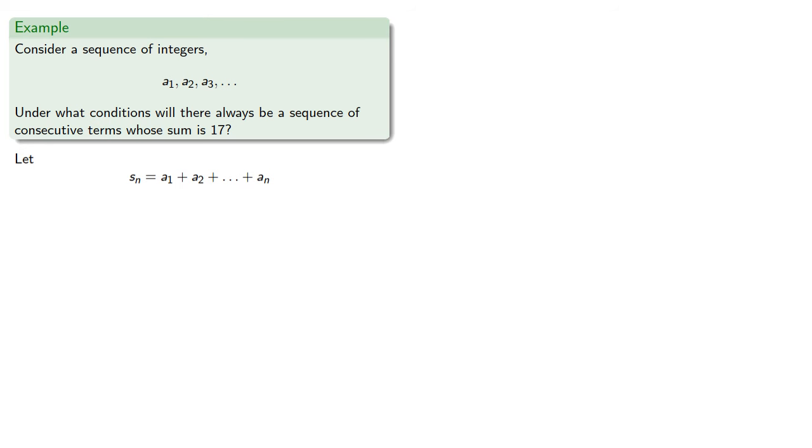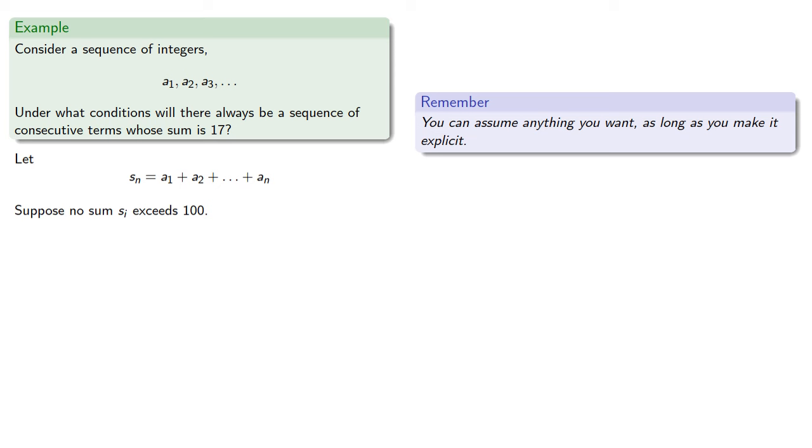So remember, you can assume anything you want, as long as you make it explicit. Because we need a maximum value for the partial sum, let's suppose no sum si exceeds 100, where we pick 100 because we like the number 100. If no sum exceeds 100, then no sum plus 17 exceeds 117.